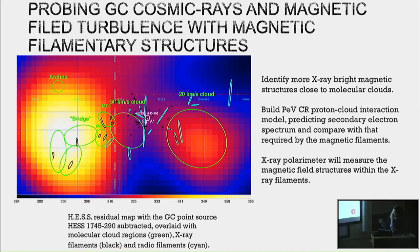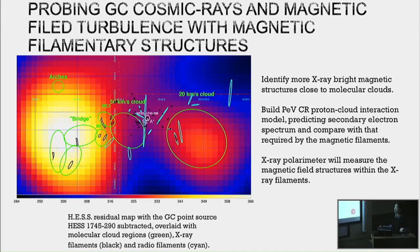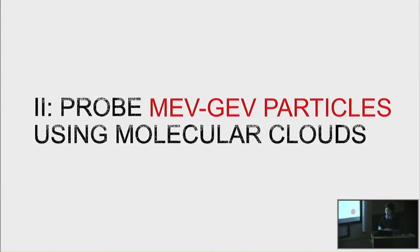Next steps: identify more X-ray magnetic filamentary structures, and build a PeV cosmic ray proton-cloud interaction model applicable to galactic center giant molecular clouds. We can calculate the secondary electron spectrum and compare with what is required by the magnetic filaments to check self-consistency. Future X-ray polarimetry could detect linear polarization in X-rays from these filaments, confirming synchrotron origin.